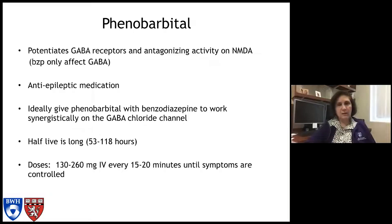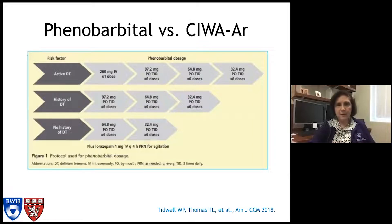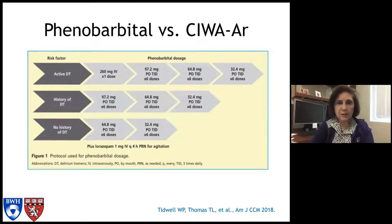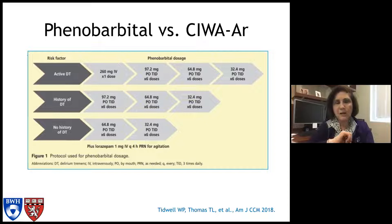Some protocols start at 260 milligrams IV every 15 to 20 minutes until symptoms are controlled — again, for somebody who is severely impaired. This is from a paper from the American Journal of Critical Care Medicine showing the phenobarbital dosing used. Patients with active DTs got a higher first dose and a longer taper versus those without a history of delirium tremens. This paper showed a nice protocol you could use at the bedside.